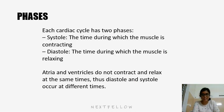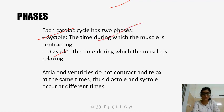Each cardiac cycle has two phases: systole and diastole. Systole is the time during which the muscle is contracting; diastole is the time during which the muscle is relaxing. Atrial systole and ventricular systole do not contract and relax at the same time — they occur at different times. This is very important.